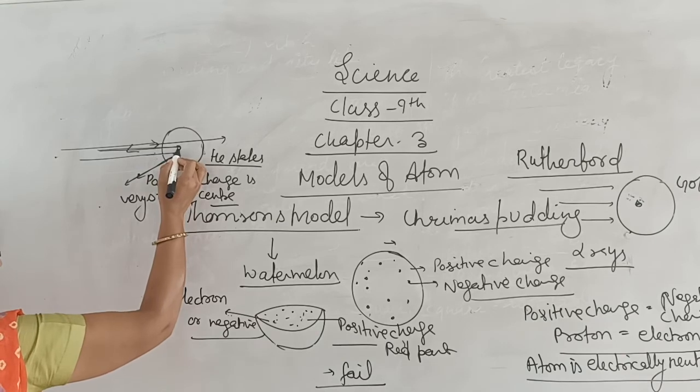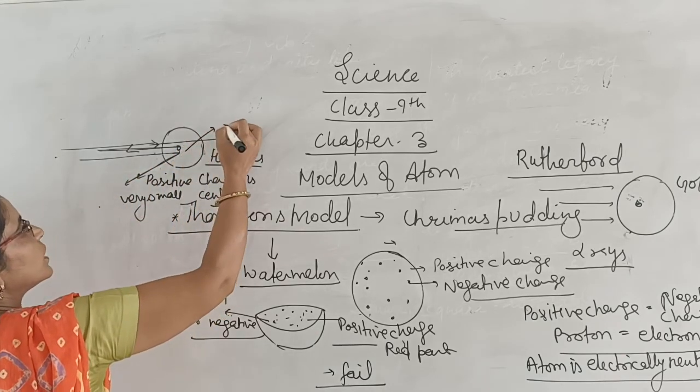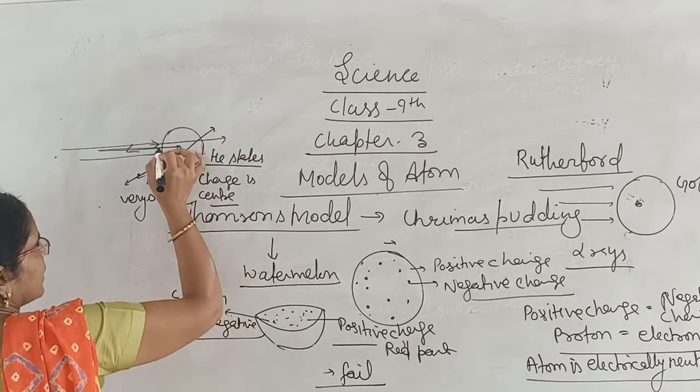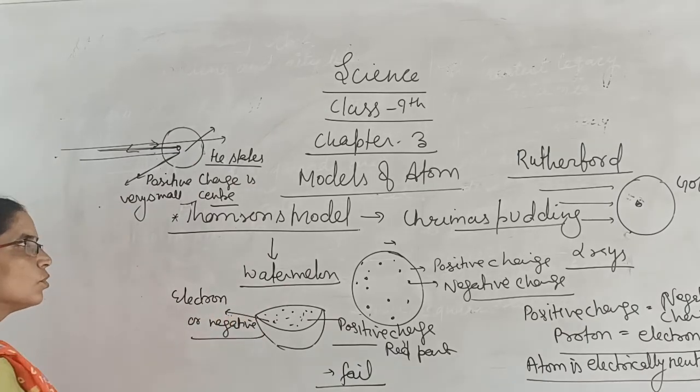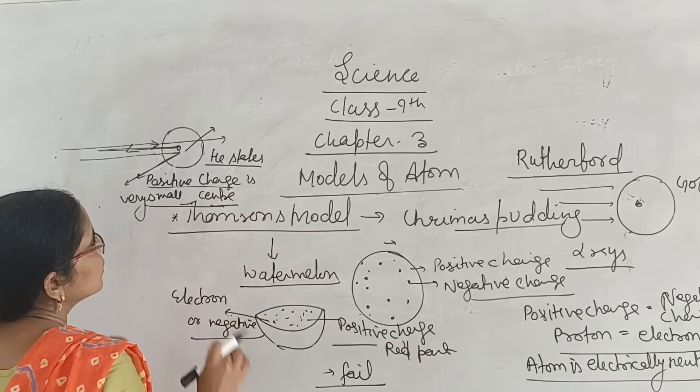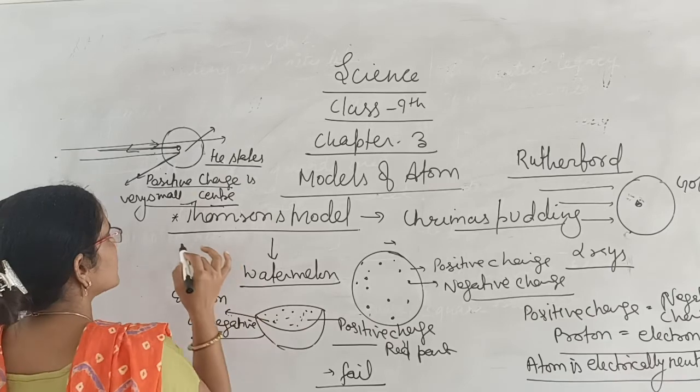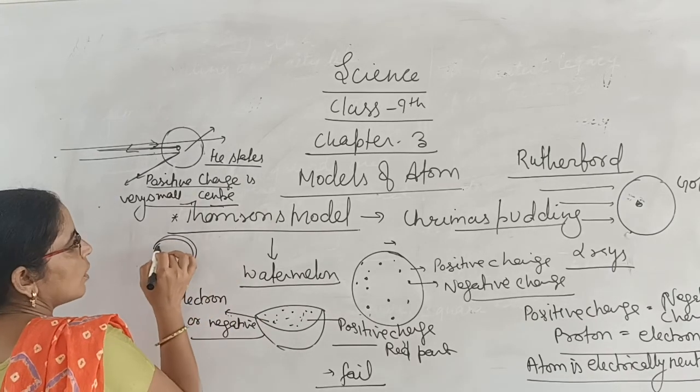The second observation: rays strike the center and reflect at some angle. Third, rays directly strike the center and return on their own path. So he explains that the model of atom contains positive charge in the center, whereas electrons revolve around it.